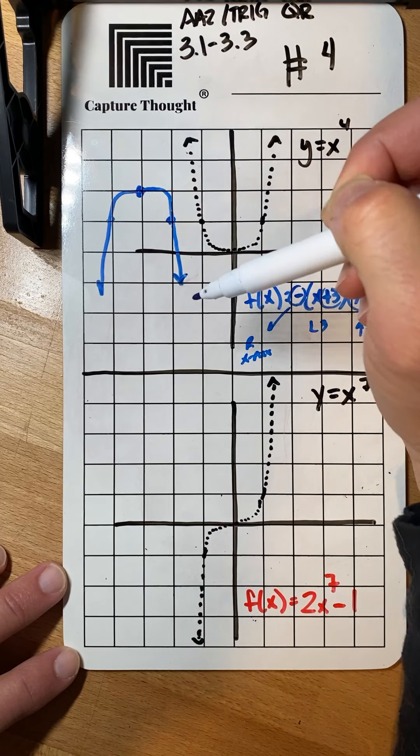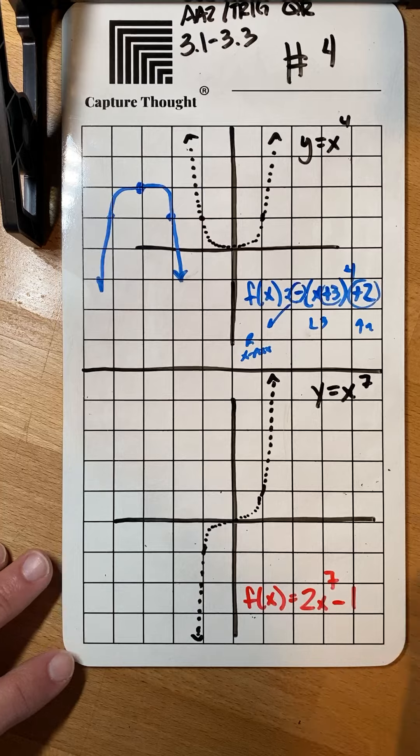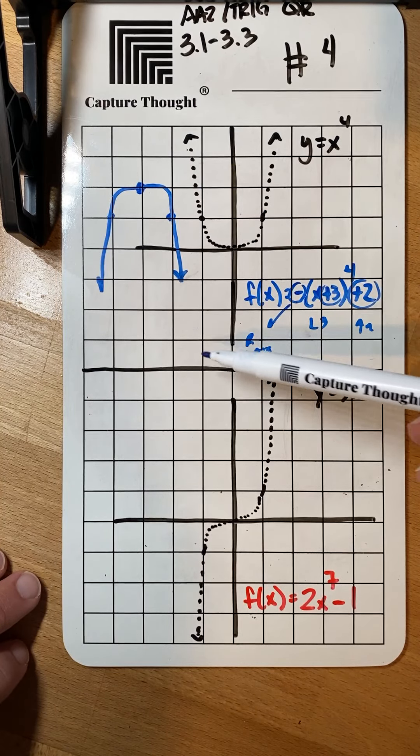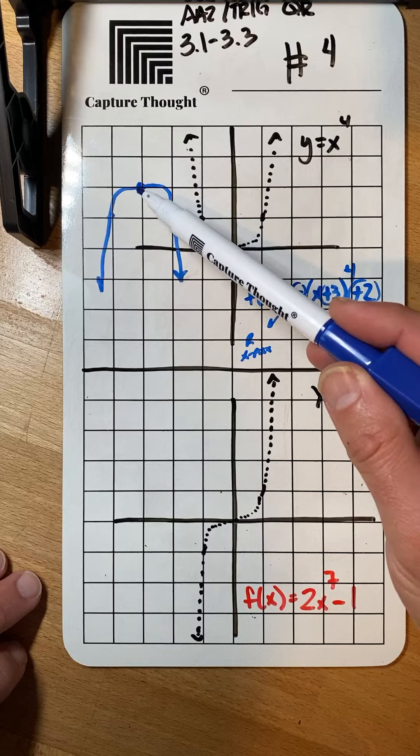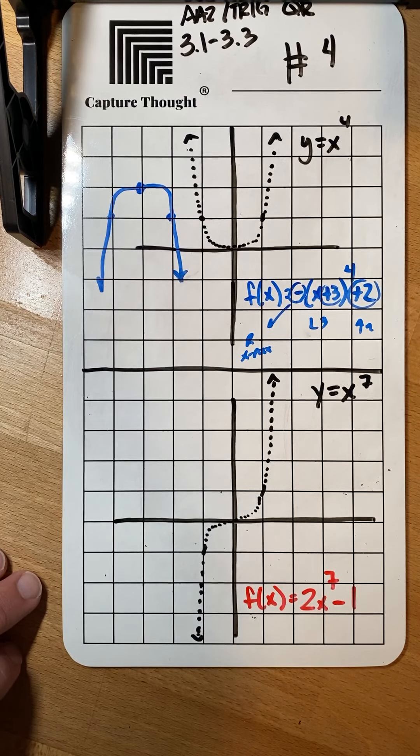Now you could use the calculator and find some table of values but all it really wanted was a sketch. So that's good enough for a sketch. As long as you give me like three easy clear points then that's good enough.